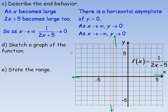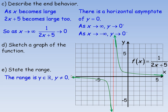To sketch the graph, we join these together — rational functions always have branches like this, giving two branches. That's a sketch of the graph. To state the range: the range is all real numbers except zero, because there is a horizontal asymptote at y = 0, so y can never equal zero.